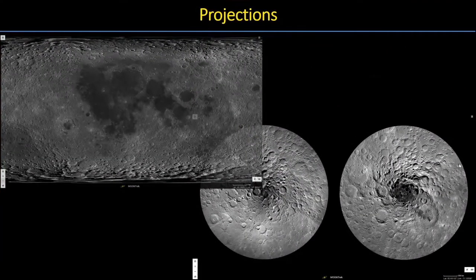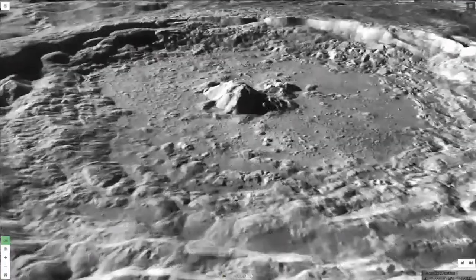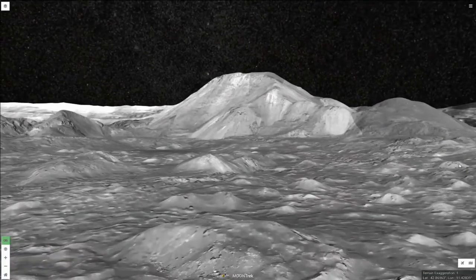We have different projections available within the Moon Trek portal — an equirectangular projection, both north and south polar projections, and a 3D globe projection that allows you to interactively fly across the surface of the Moon using standard keyboard game controls and mouse. Here we'll fly down into Tycho crater and actually go roving across the floor of the crater.